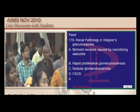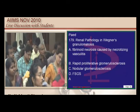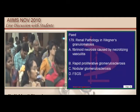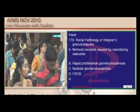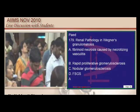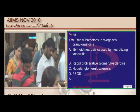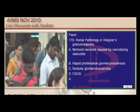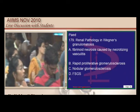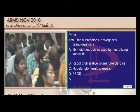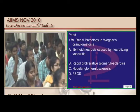In Wegener's granulomatosis, there is fibrinoid necrosis with necrotizing vasculitis, which is the predominant histopathological hallmark.